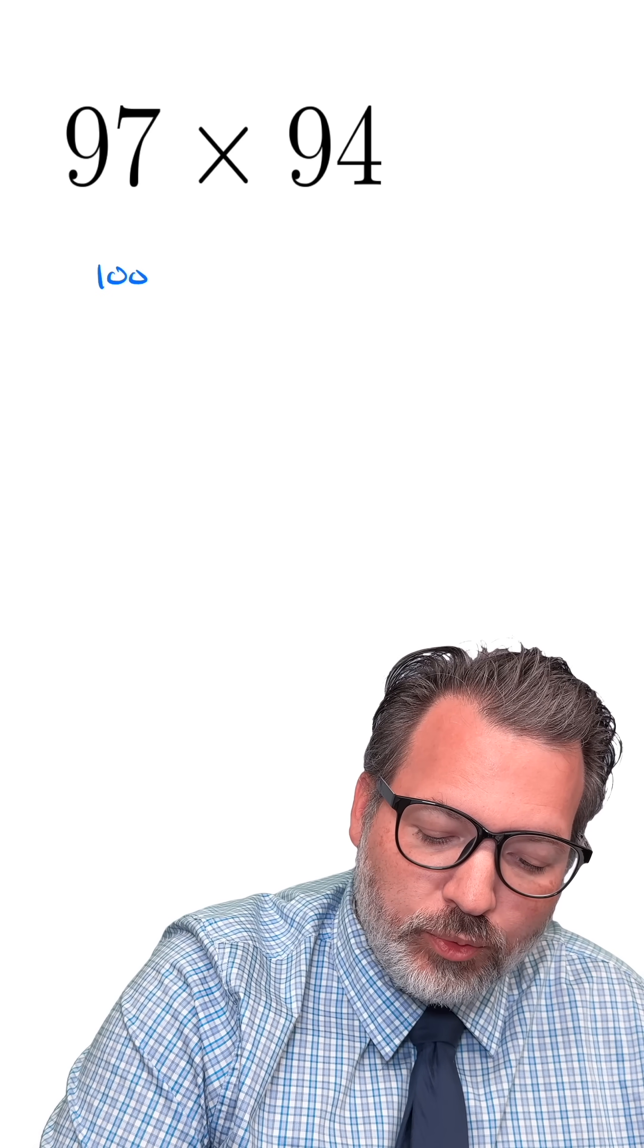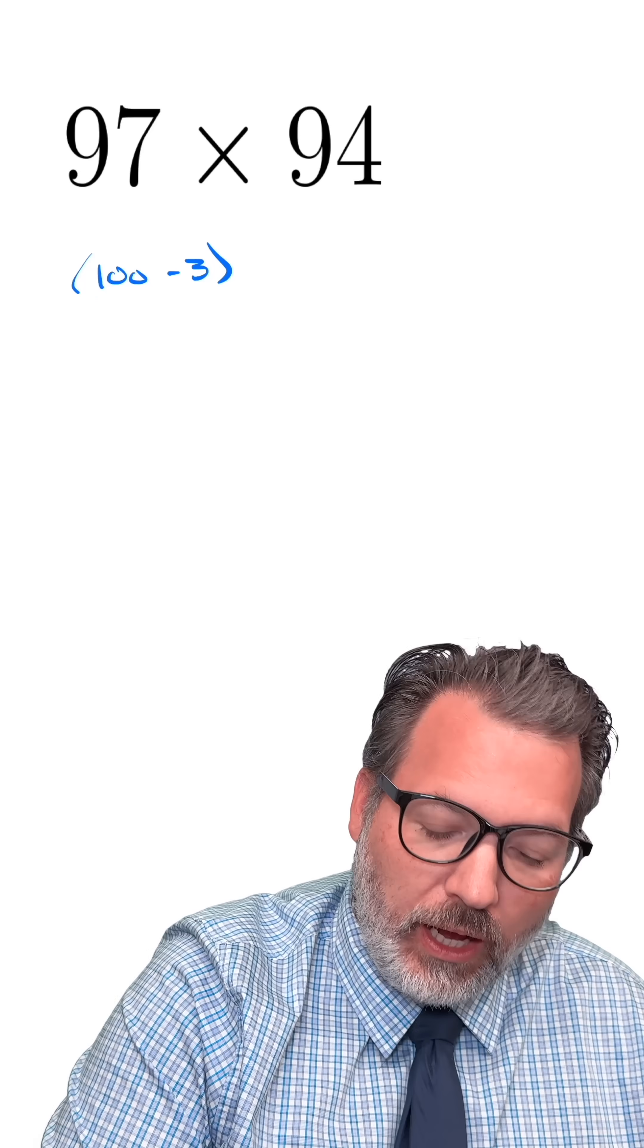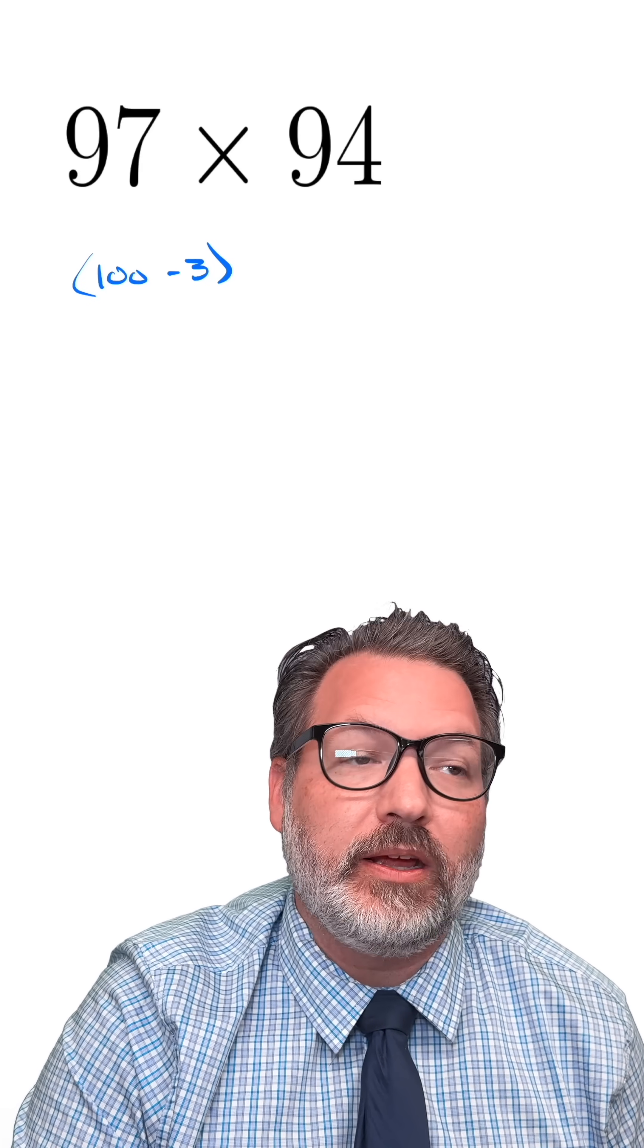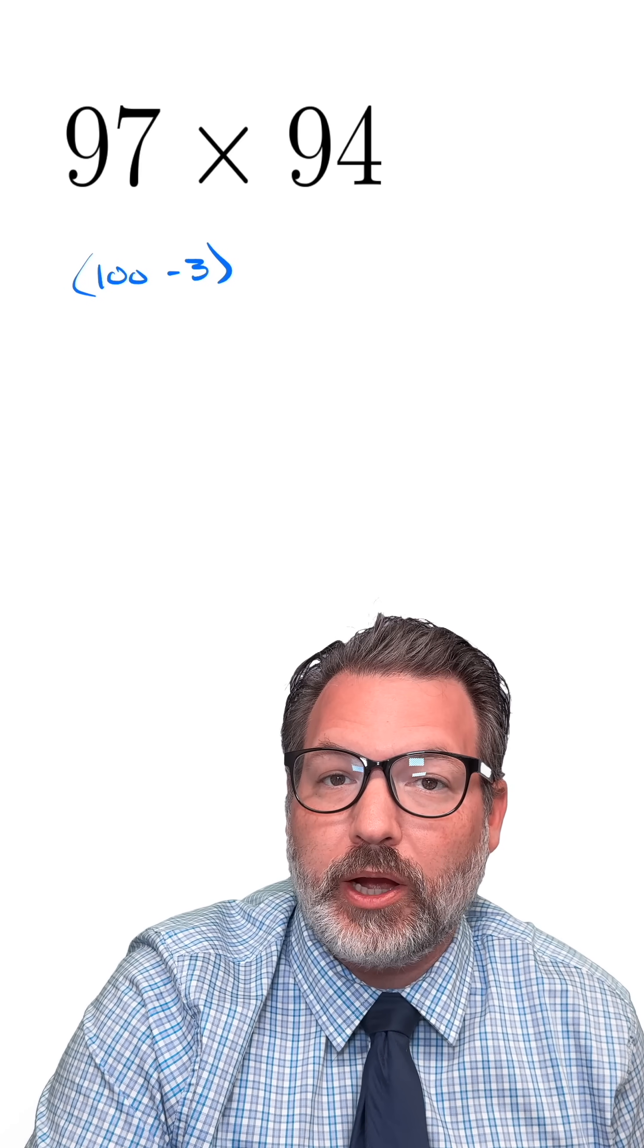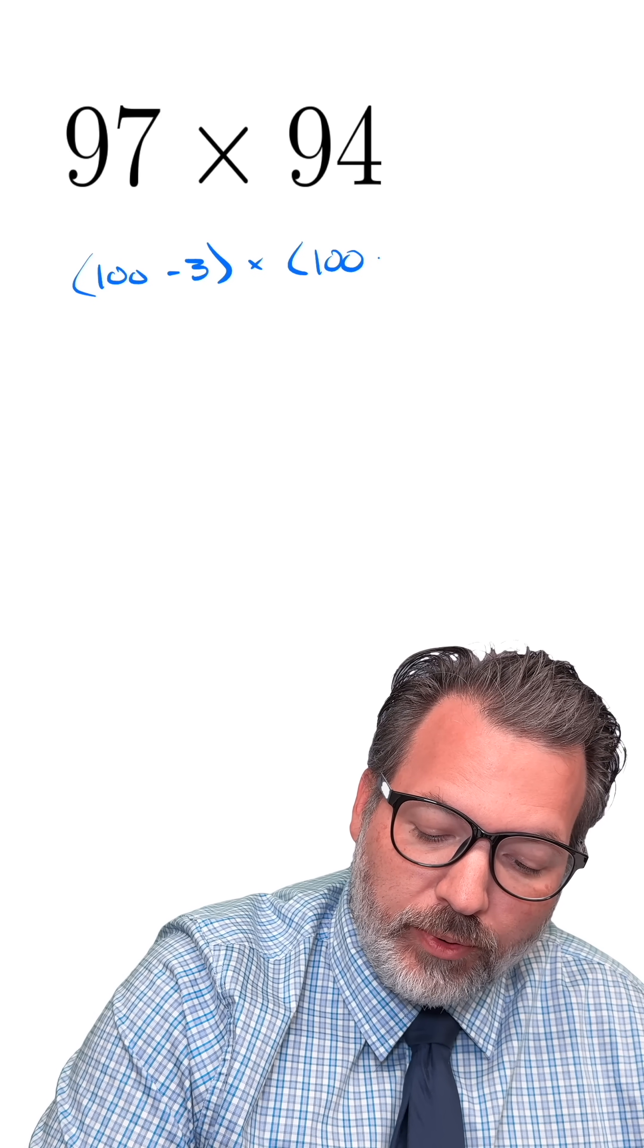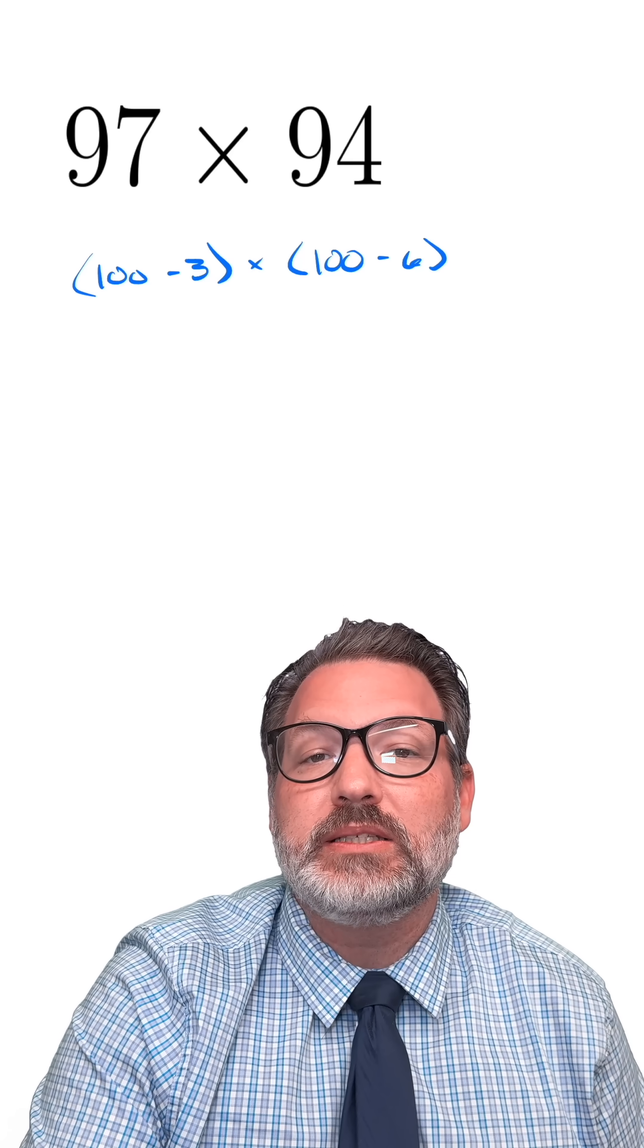This 97, let's actually rewrite it as 100 minus 3. The fact that it was 3 away from 100 is definitely something we were using a moment ago. Similarly, for 94, we're going to rewrite this as 100 minus 6.